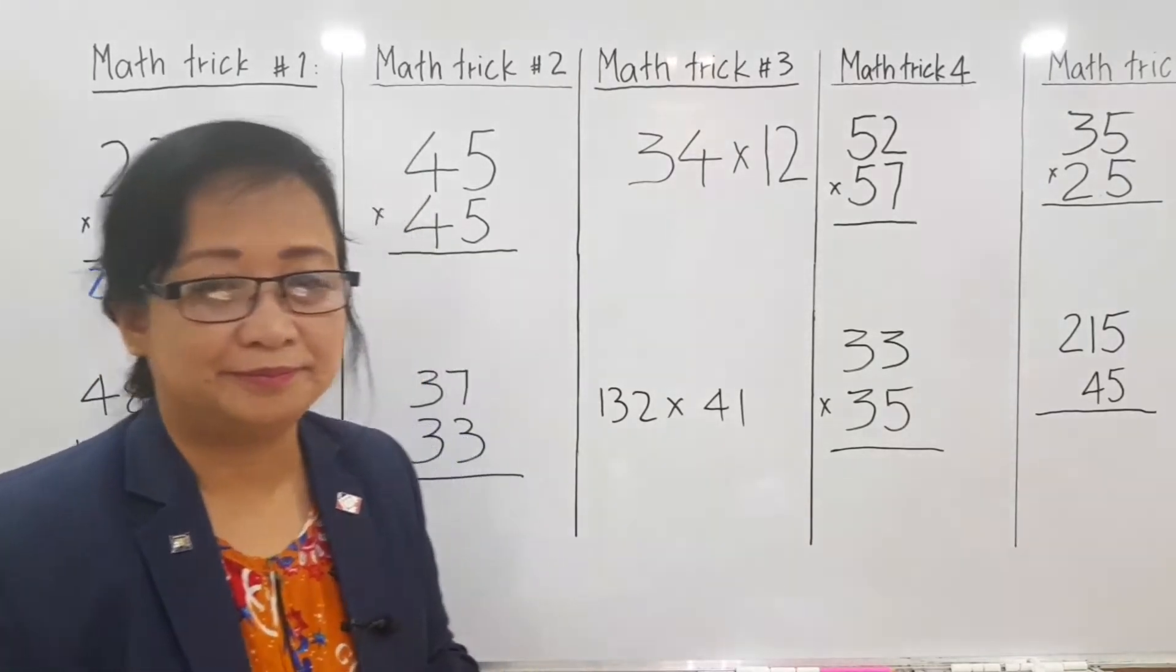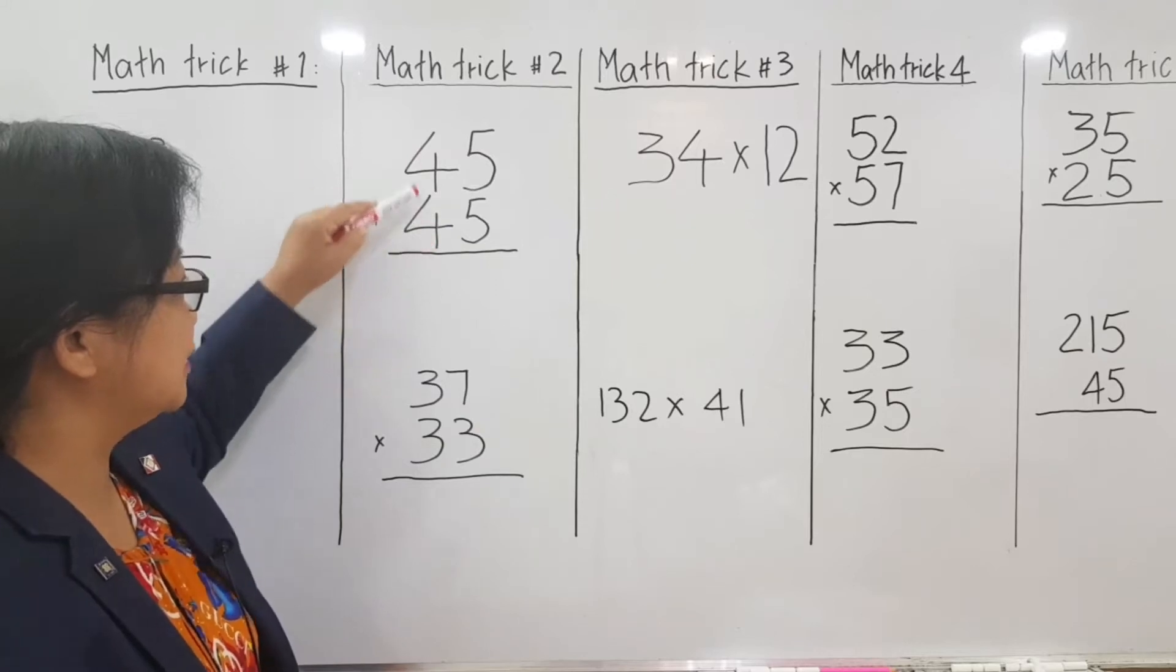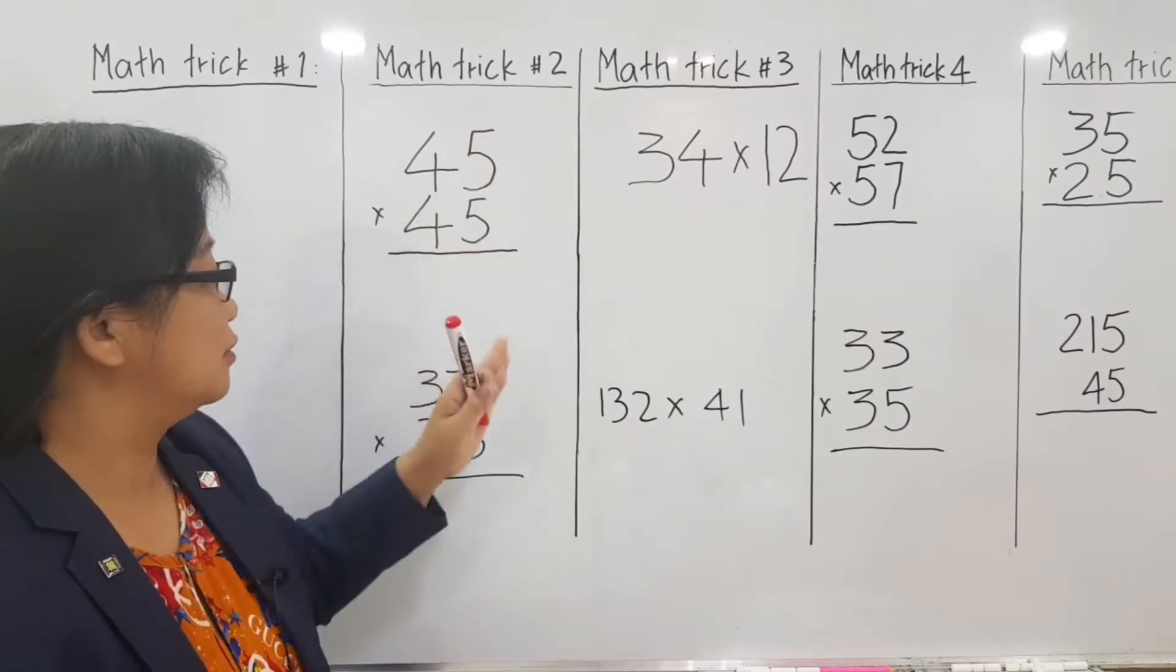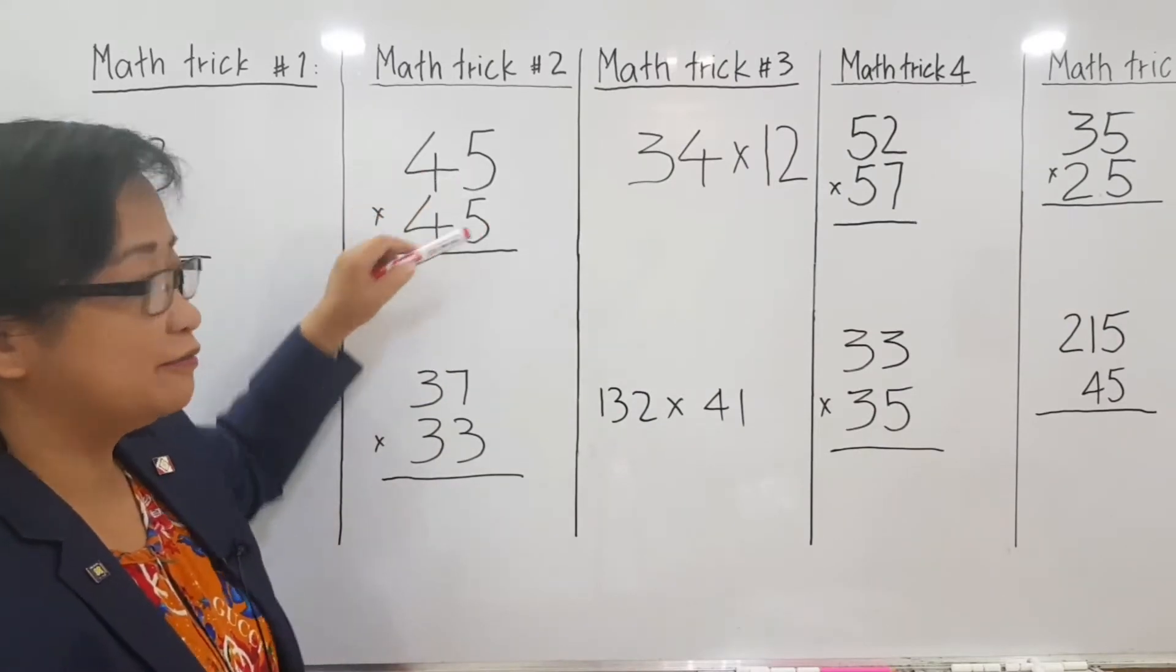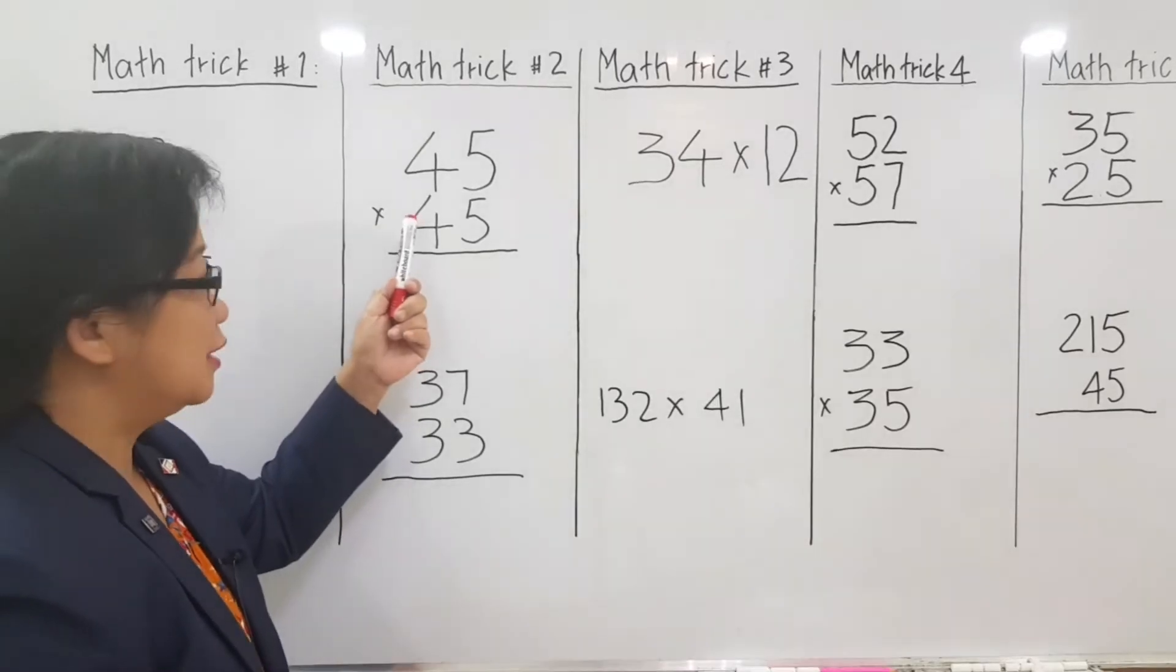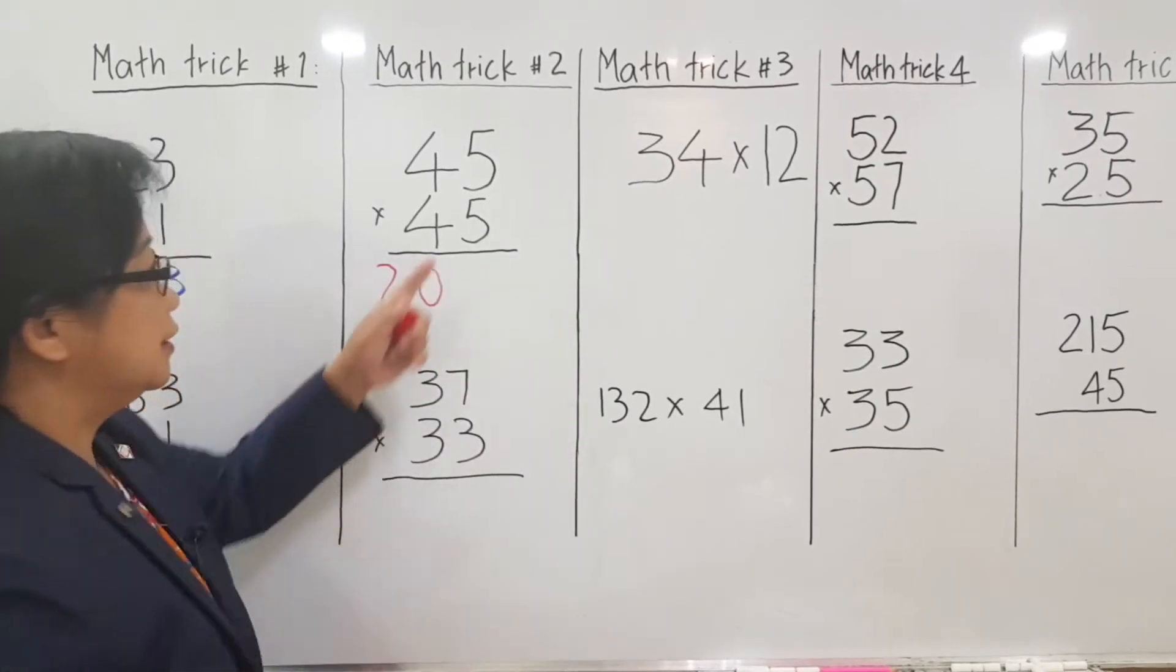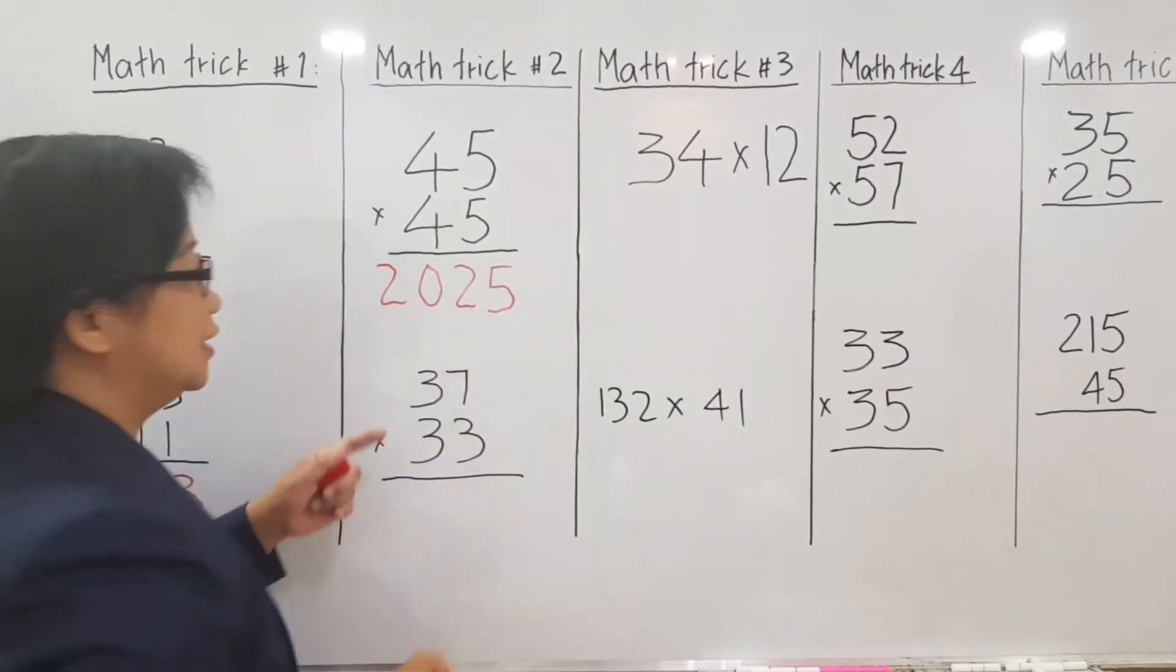Now, matrix number 2. You can use this one if and only if the tens column - the numbers are the same, and the ones column, the total must be 10. Like, for example, this one, 4, this is the same. 5 plus 5 is equal to 10. We have here 4. Now, what is after 4? After 4 is 5, so multiply 4 by 5 is equal to 20. The last procedure is 5 times 5 is equal to 25. See? It's easy and fast.